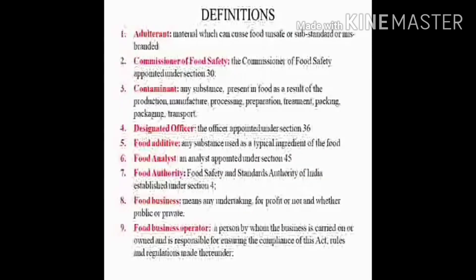Next are definitions of some of the important terms in this act. First is adulterant: material which can cause food to be unsafe, substandard or misbranded. Next is Commissioner of Food Safety: the commissioner of food safety appointed under section 30.